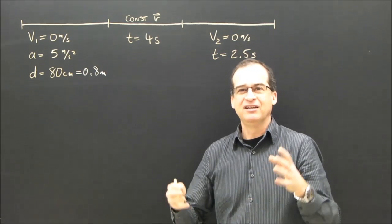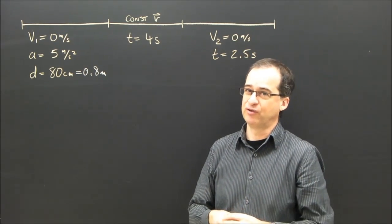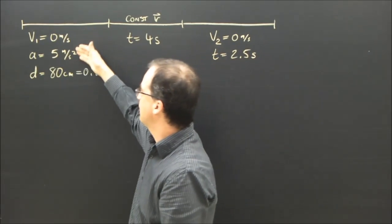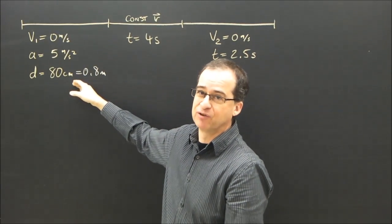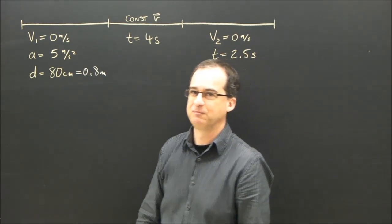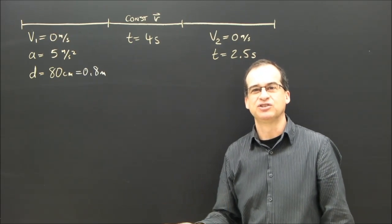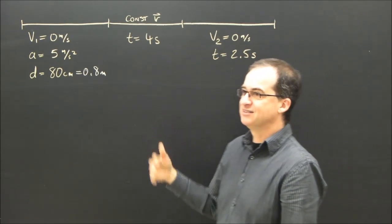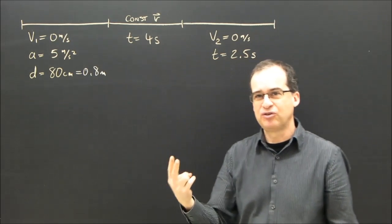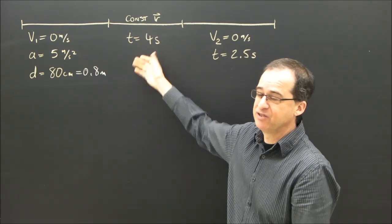Anytime you're dealing with acceleration, you need three things, and then you can solve for anything you want. I have three things, three variables in the first section, so I can find anything I want about this part of the trip, the speeding up part. The uniform motion or constant velocity section, you only have one formula, d equals v times t, and since it's constant velocity, you need two things to solve for the other one, and I've only got one, so I'm going to need more information here.